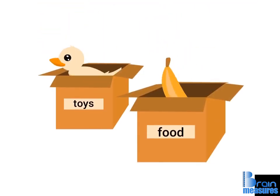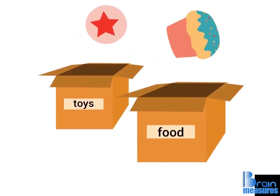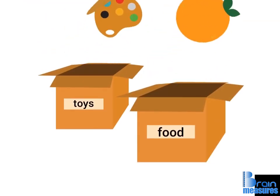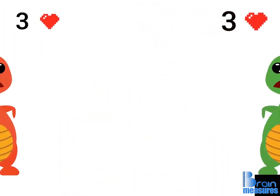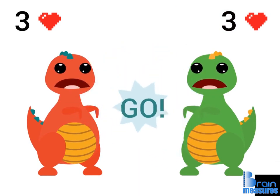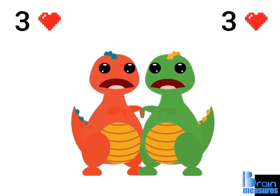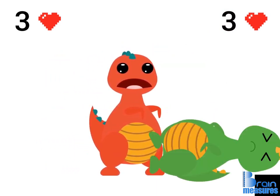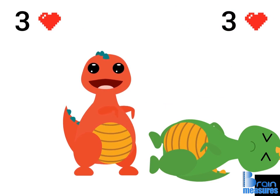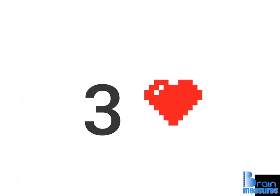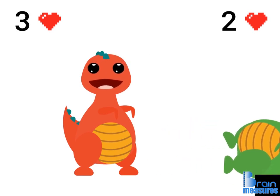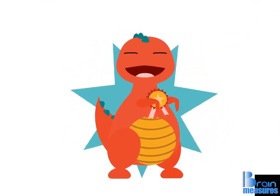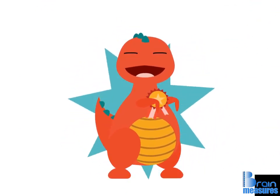We can always change the value of the variables that we create. Picture a variable named lives with an initial value of 3. It represents the number of lives we have in a video game. During the game, we lose a life in a battle with an enemy. We now have to reduce the number of lives from 3 to 2. Luckily for us, this is quite simple. All we have to write in the code is this.